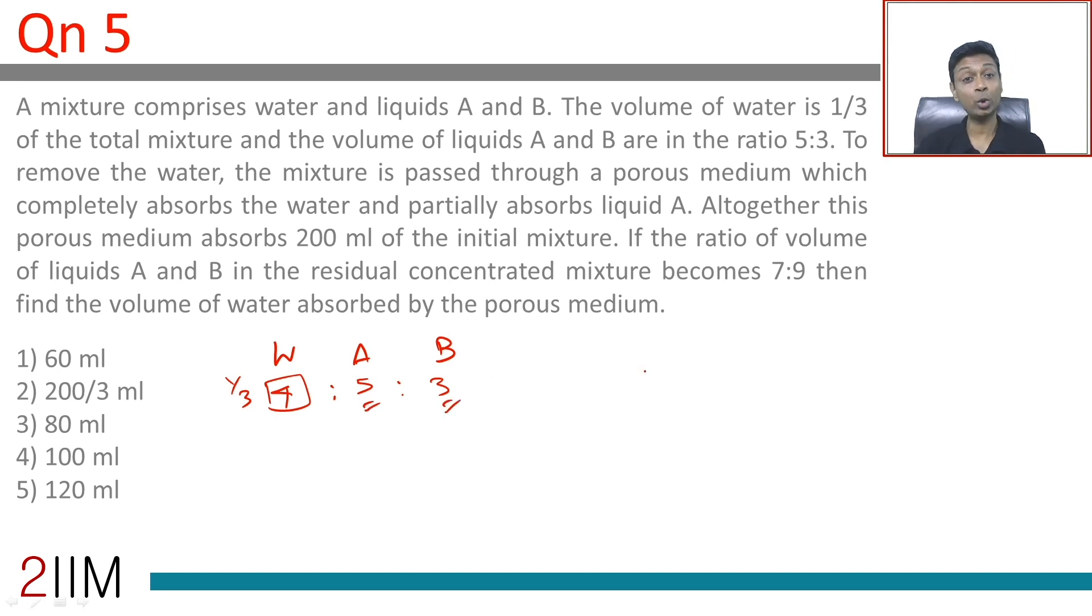Eight units is two-thirds, so the remaining should be four units. The ratio of water to A to B is 4:5:3.